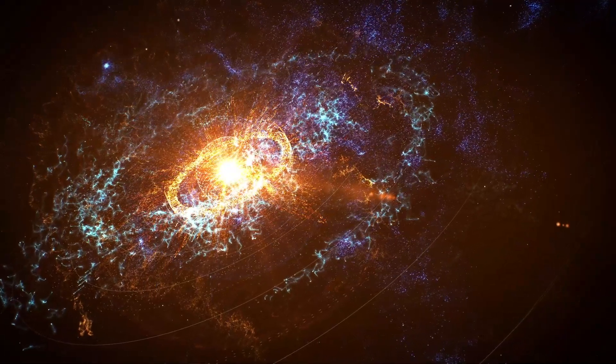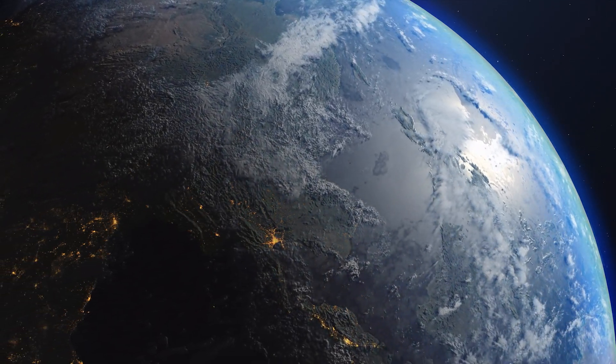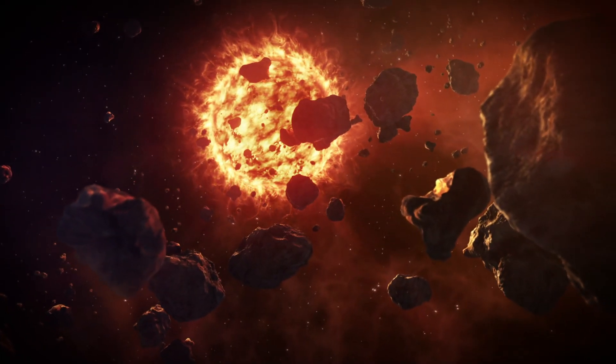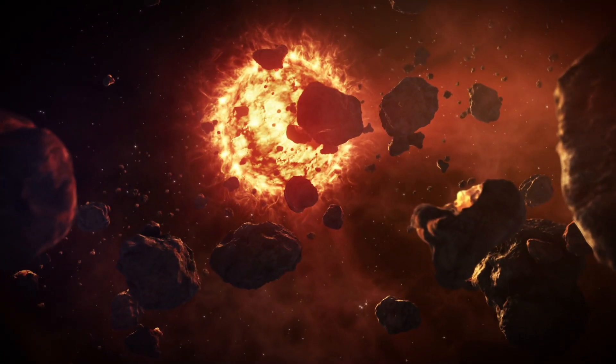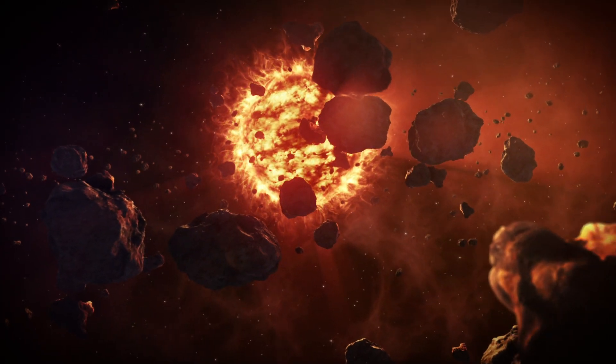According to models of solar system formation, Earth being an inner solar system planet should contain little or no water. Early models of planetary formation predicted that the nebular gas near our young sun was too hot to form ice.